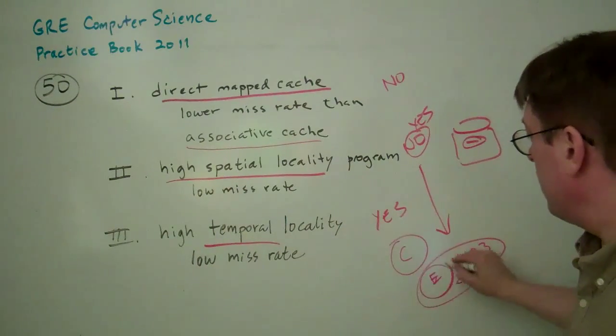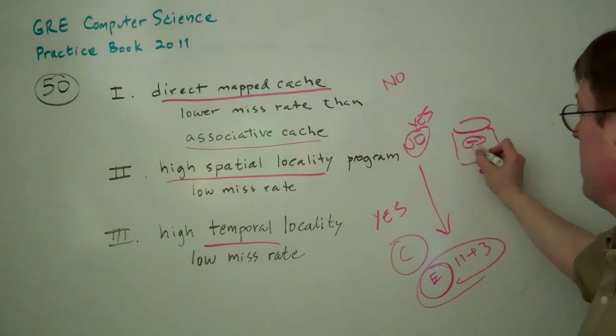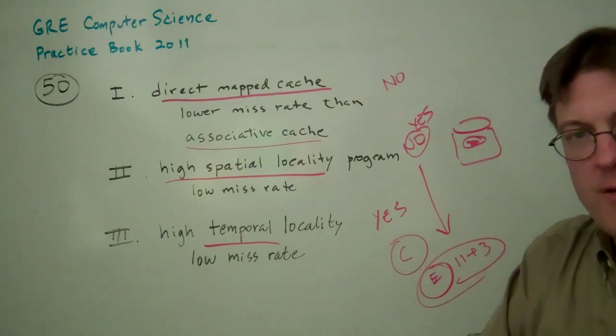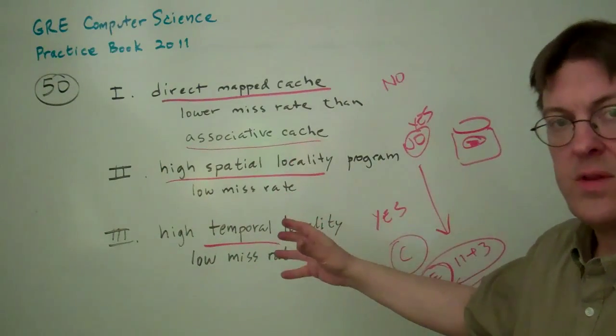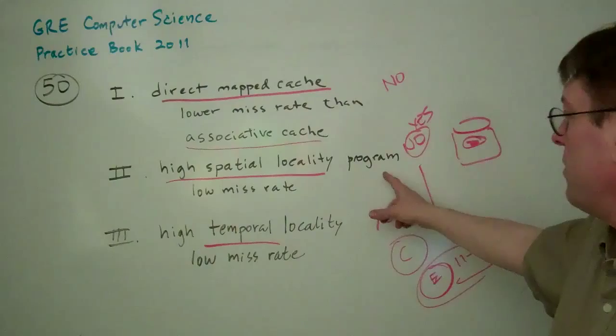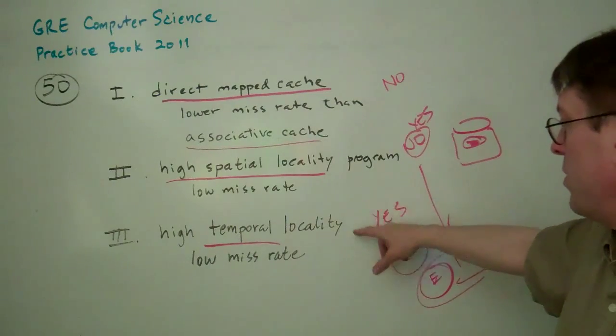So yeah, the book is right. I'm wrong. Now the answer to this is E, because the data that's spatially close would...